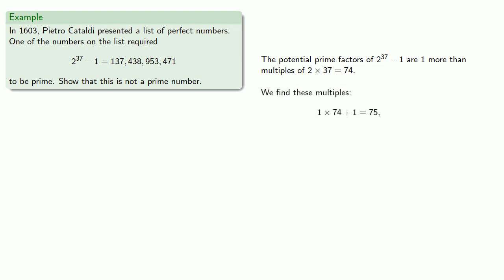So, 1 times 74 plus 1, that's 75, but that's not a prime number, so it's not a potential factor. 2 times 74 plus 1 is 149, that is a prime number, and so the first potential prime factor is 149, and we find...